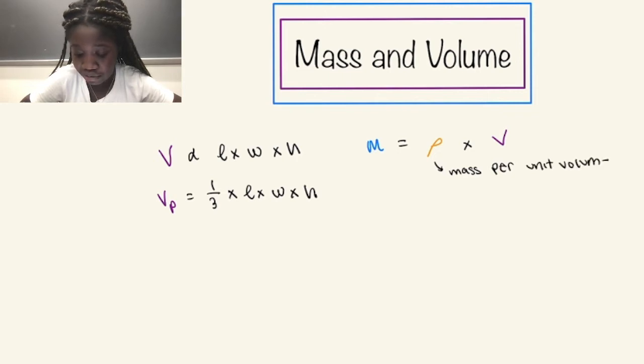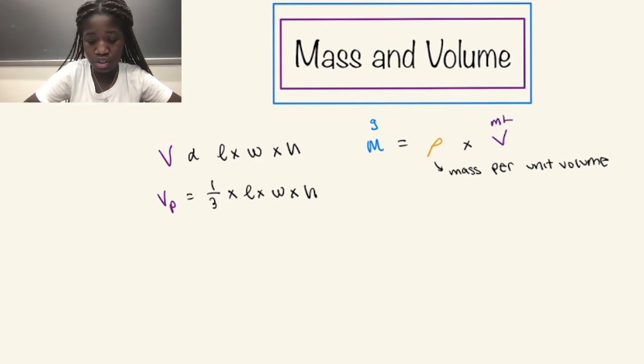Now density is defined as the mass per unit volume. And for determining the units, we know that a common unit for mass is grams, a common unit for volume is milliliters, therefore the units for density would be grams per milliliter. Another common unit is kilograms per meter cubed, but we're going to be focusing on grams per milliliter because that is the problem we have on hand.